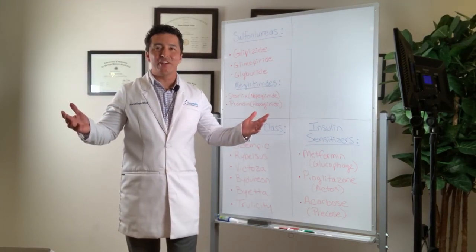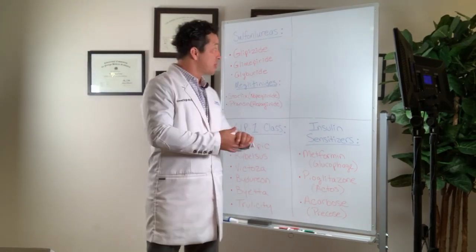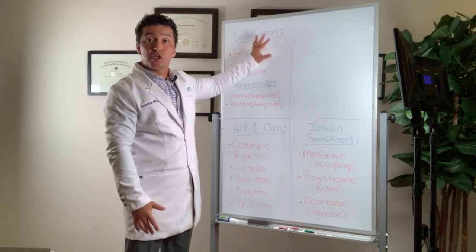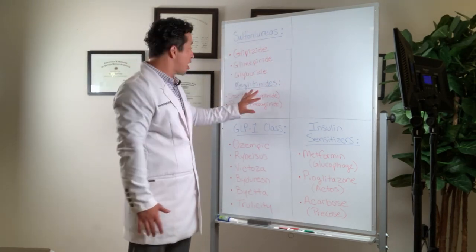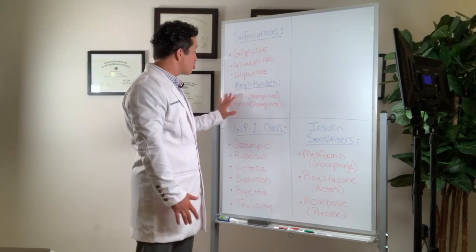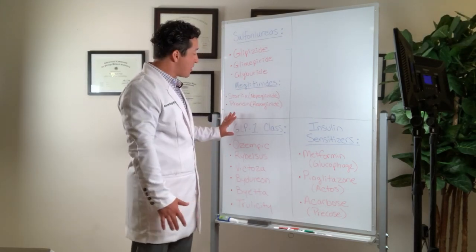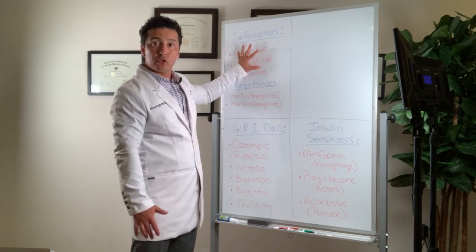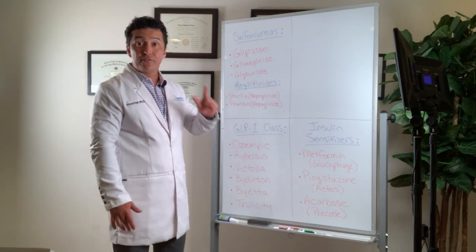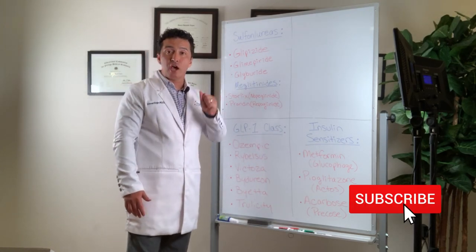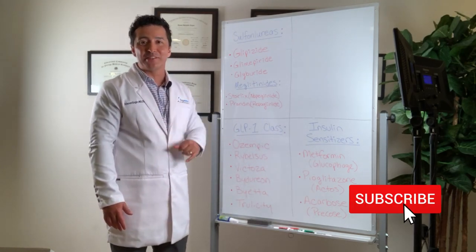Hey guys, this is Dr. Ahmet Ergin. Welcome to SugarMDs. Today we are going to talk about sulfonylureas, glipizide, glyburide, glimepiride, the most commonly prescribed medications. And we are going to touch base on Starlix and Prandin. We're going to talk about the differences between sulfonylurea class, GLP-1 class, and insulin sensitizers. So tune in, and if you like this video, do not forget to give a thumbs up and subscribe.